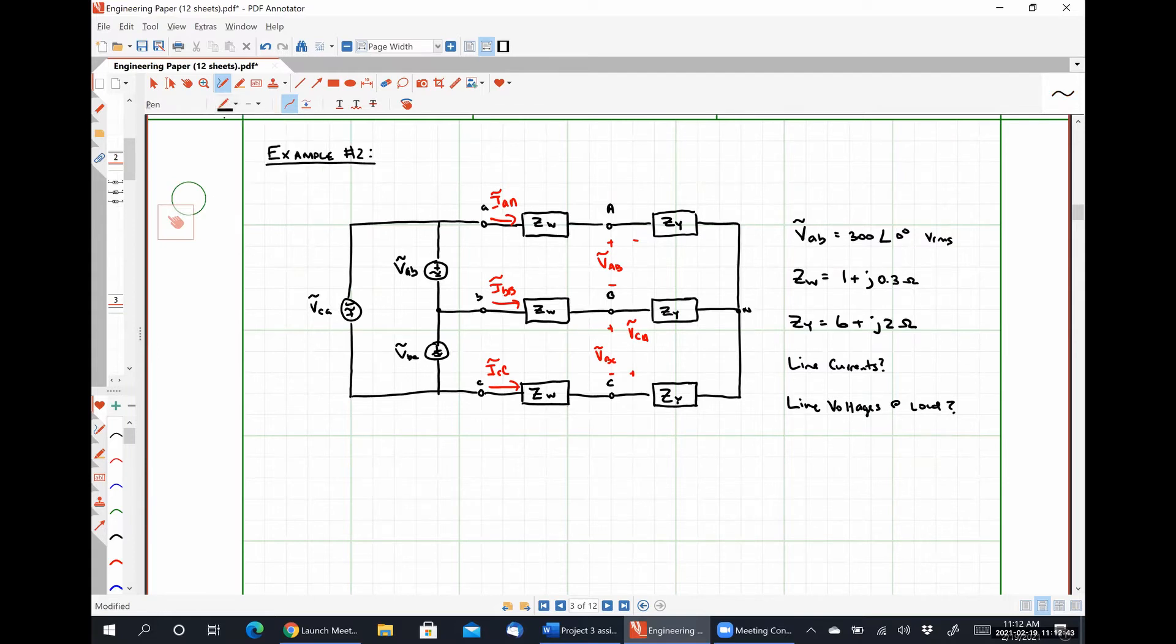So what are we going to need to do to this guy to convert it into a YY system? So our source is delta connected. So we obviously need to convert our source from a delta connected source into a Y connected source. Anybody remember how we do that? So if we want VAN we have VAB. What do we do? Multiply by three. No, because it's a source it's not as simple as multiplying by three. The only time we will ever multiply by three is if we wanted to convert a Y connected load into a delta connected load.